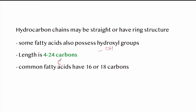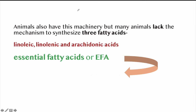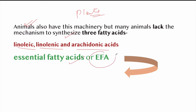The length of fatty acids is generally 4 to 24 carbons, and common fatty acids have 16 to 18 carbons. Plants have biosynthetic machinery to manufacture all types of fatty acids. In case of animals, they also have the machinery, but many animals lack mechanisms to synthesize three fatty acids: linoleic and linolenic acids. These are called essential fatty acids (EFA), so they must be present in the animal diet.